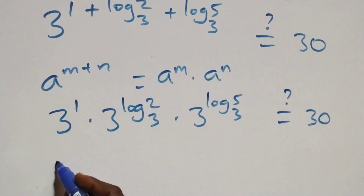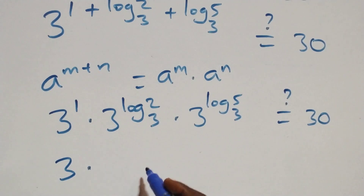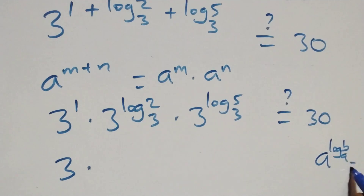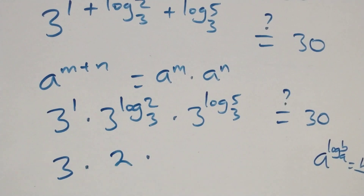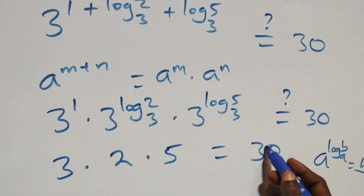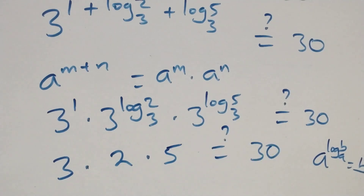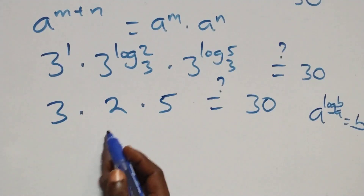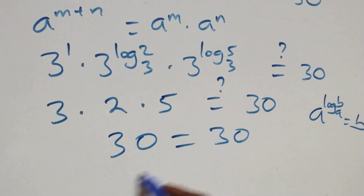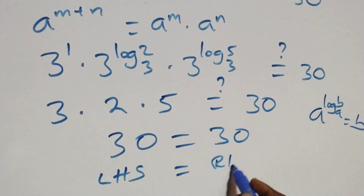Using the identity a raised to power log_a(b) equals b, we have 3 raised to power 1 gives 3, times 2, times 5, equals 30. So 3 times 2 gives 6, times 5 gives 30. This equals 30 on the right-hand side. Left hand side equals the right hand side — verified.